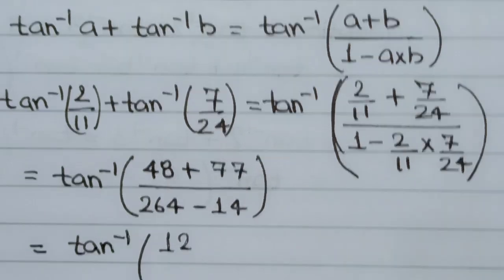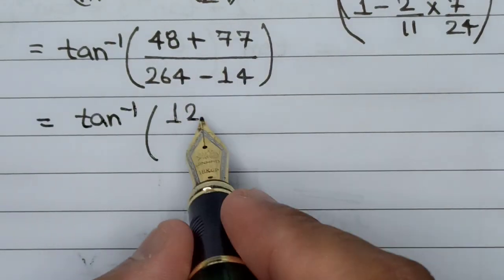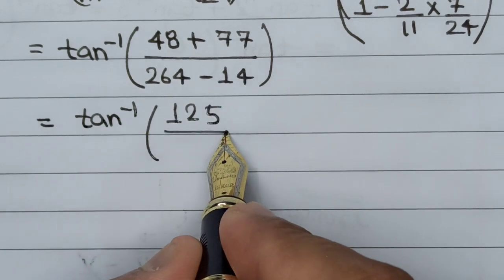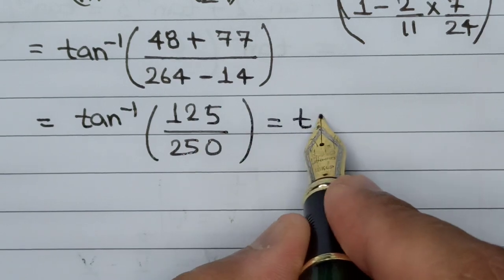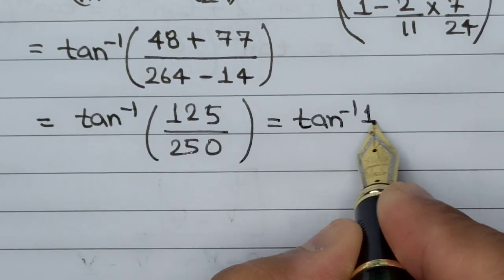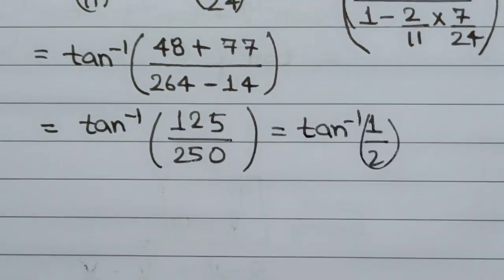This becomes tan⁻¹(125/250), which gives us the answer as tan⁻¹(1/2).